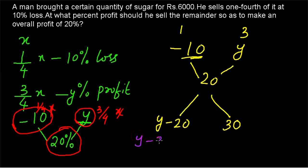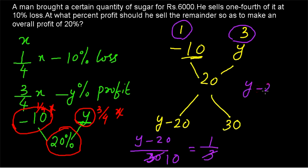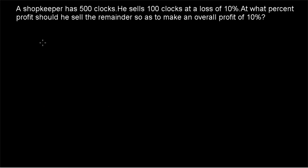So Y minus 20 corresponds to the one part, and the difference between 20 and minus 10 is 30, corresponding to the three parts. Therefore: (Y − 20) / 30 = 1 / 3. Cancelling, Y minus 20 equals 10, so Y equals 30. The remainder should be sold at 30% profit.